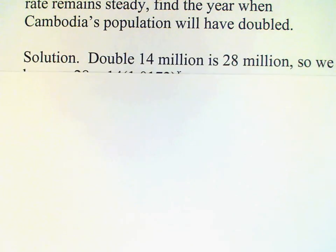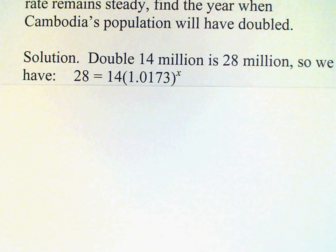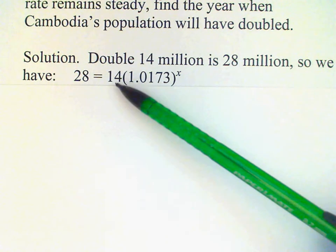So if we double 14 we get 28, and that means our equation is going to look like this: 28 = 14 × 1.0173^x. Remember, my 14, that's my initial amount.